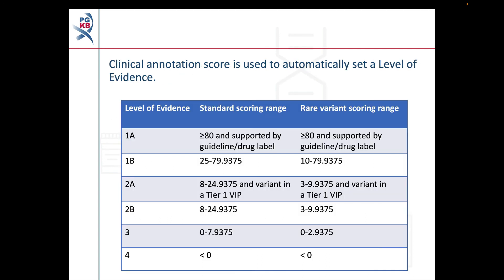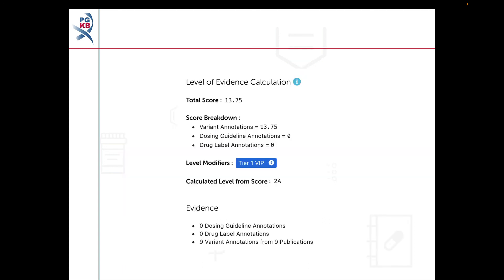The score of a clinical annotation is used to automatically set a level of evidence for the annotation, as shown in this table. The algorithm uses a separate scoring range for rare variants, broadly defined as those found at a global population frequency of less than 1%. Rare variants are not commonly reported on and tend to only be found in small studies, so use of this scoring range compensates for this. The total score alongside a breakdown and any level modifiers are displayed on each clinical annotation page at the top of the evidence section.